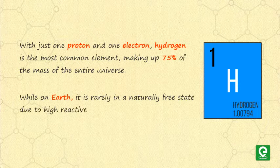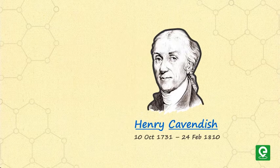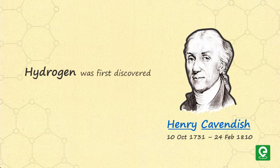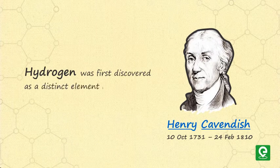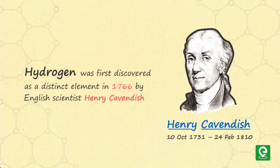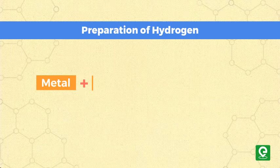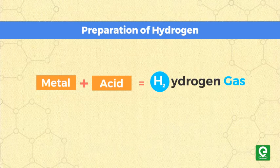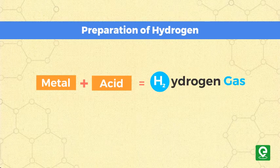Hydrogen was first discovered as a distinct element in 1766 by English scientist Henry Cavendish. He prepared it by reacting an acid with a metal and described the gas released as inflammable air from metals.